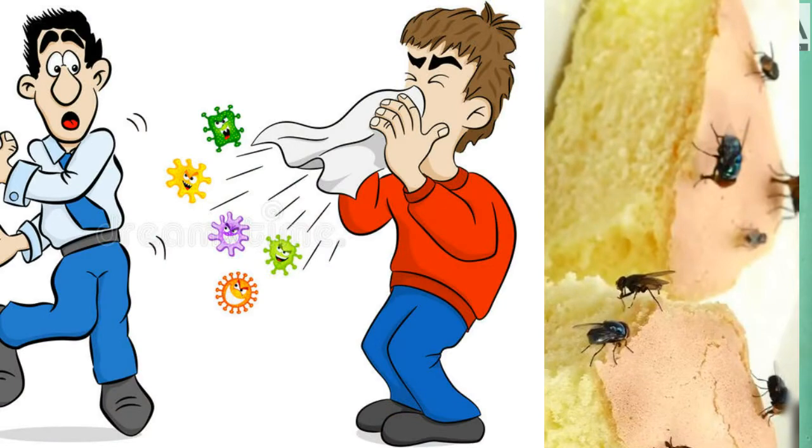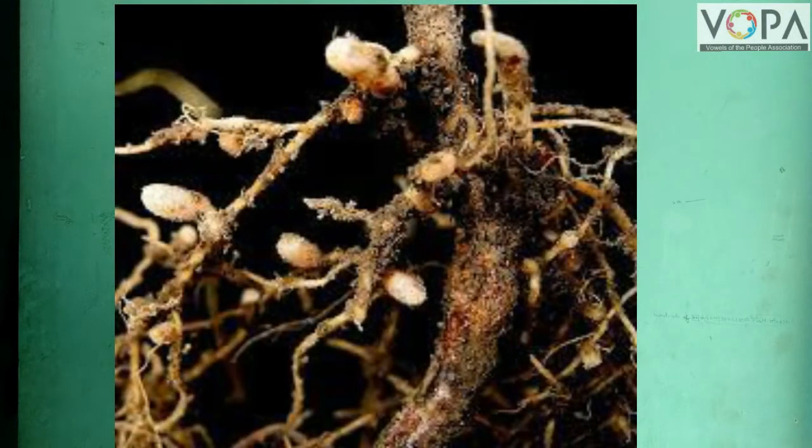These microorganisms occur everywhere around us. They are present in air, water, soil, food, garbage, and sewage water. Some microorganisms are also present in the body of plants, animals, and human beings. Some microorganisms live singly, while others live by forming colonies.